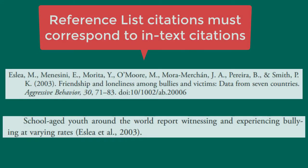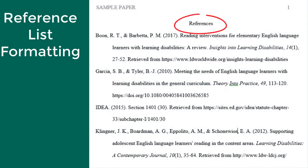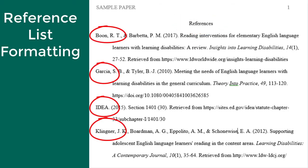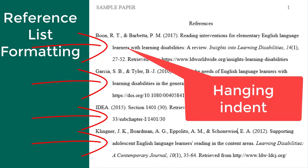Remember that the first item in your reference list citations must correspond to your in-text citations. When formatting your reference list, the word 'references' should be at the top of the page in Times New Roman 12-point font. Your references should be alphabetized by the first entry in each citation. And all lines after the first line in each entry should be indented — this is called a hanging indent.